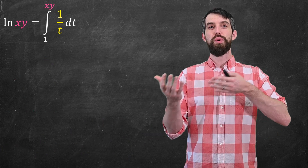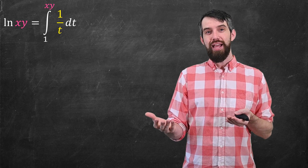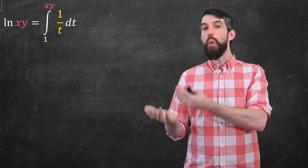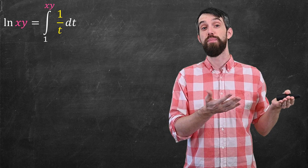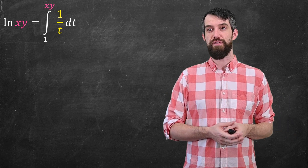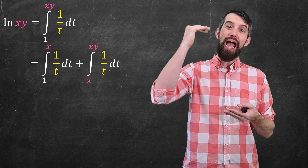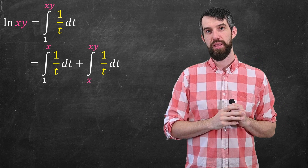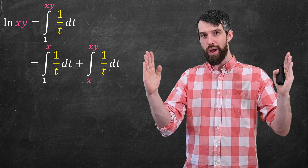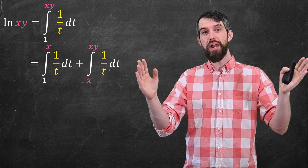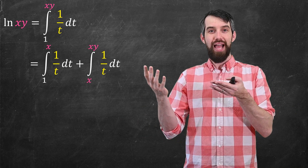As you likely know, one of the properties of the logarithm function is that the logarithm of a product, logarithm of x times y, is the logarithm of x plus the logarithm of y. I'm going to show you the proof of this log rule. By the definition of the logarithm function, this equals the integral from 1 up to x times y of 1 over t dt. I'm going to break that integral into two: first from 1 up to x, and second from x up to x times y. This uses the additivity of domain property of integrals.